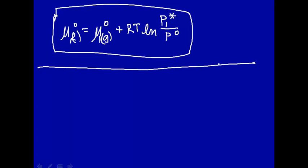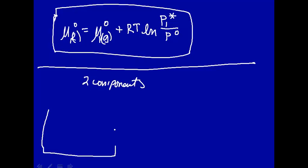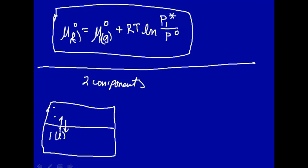Now we're going to extend the thermodynamic analysis to two components. So let's draw a picture - a picture worth a thousand words. Here's our box. We'll have component one, which is in equilibrium in the liquid. Here's component one in the gas phase. We'll now have a second component, which is a liquid down here. This will also be in equilibrium with component two in the gas phase.